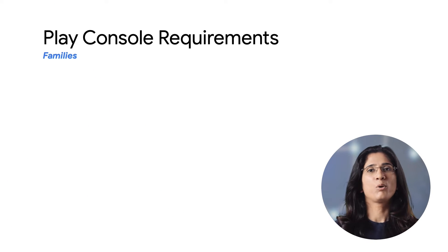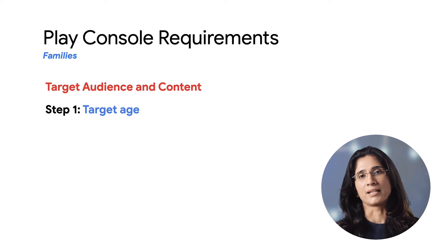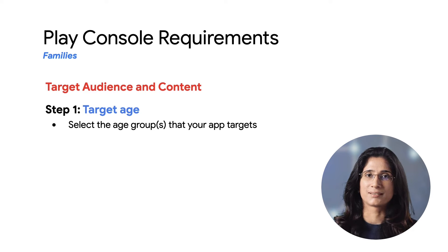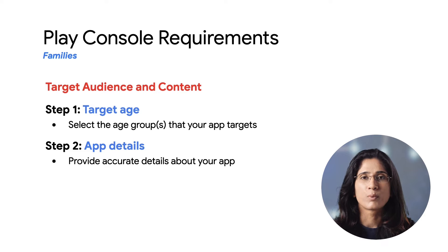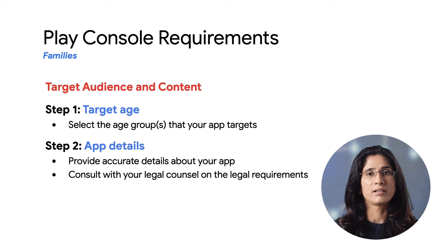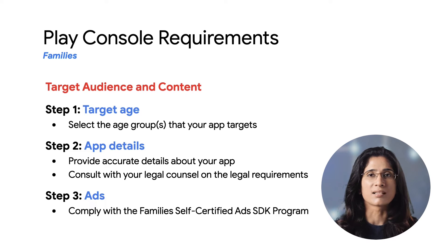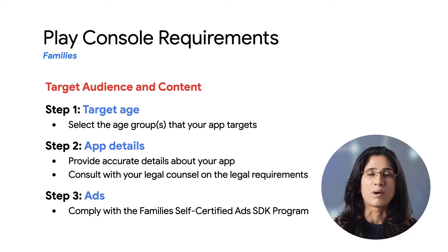Let's go over the Play Console requirements. When designing apps for children and families, you will need to manage your target audience and app content settings such as the following. First is the target age — you will need to select the age group that your app targets, and you can make multiple selections if appropriate. Second is app details — you may be asked for additional details about how your app works, and it is very important that you provide accurate answers. Some of the questions are related to legal requirements, so if you are unsure, please consult your legal counsel. Third is all about ads — if your app is serving ads to children, you will be asked about Google Play's family's self-certified ads SDK program.